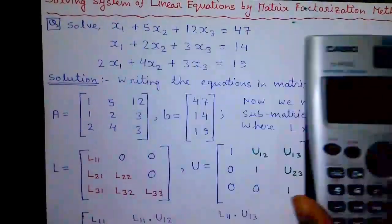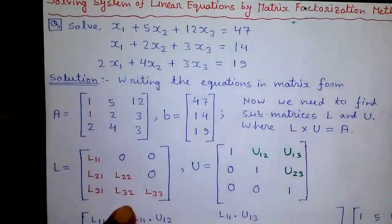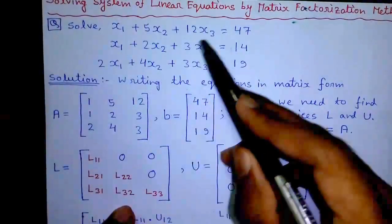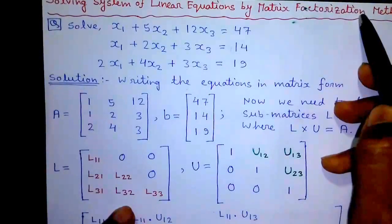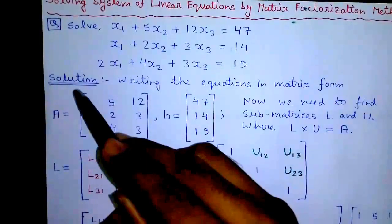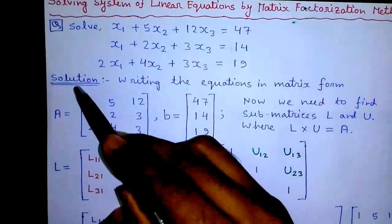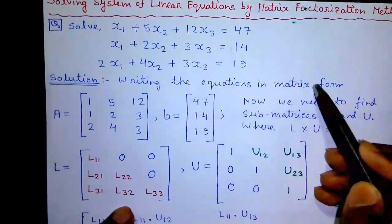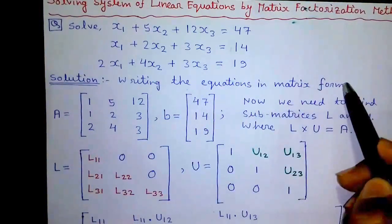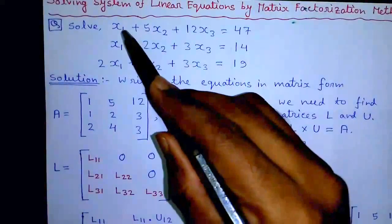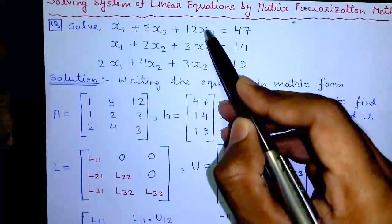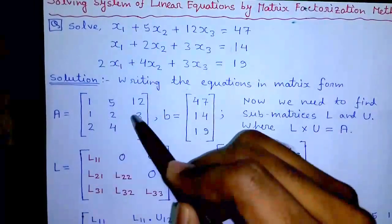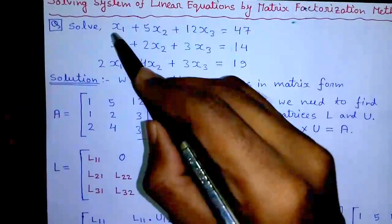Now I will tell you how to find out these answers using matrix factorization method. Let's proceed to the solution by writing the equations in matrix form. By writing the coefficients from the left hand side, you will get matrix A.